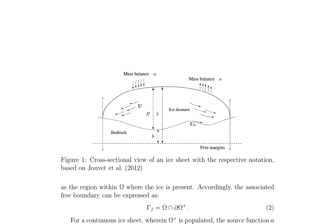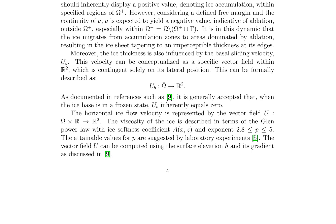The basal sliding velocity u_b is a vector field contingent on the lateral position, and is zero when the ice base is in a frozen state. The horizontal ice flow velocity u is computed using the surface elevation h and its gradient. The viscosity of the ice is described by the Glenn power law with ice softness coefficient a(x,z) and exponent p, whose values are suggested by laboratory experiments. The ice sheet model is formulated as an obstacle problem, where the bedrock acts as the primary constraint, and changes in ice thickness are studied as a variational inequality.